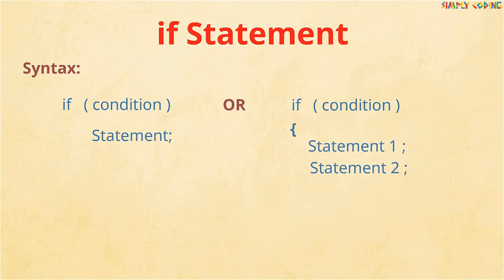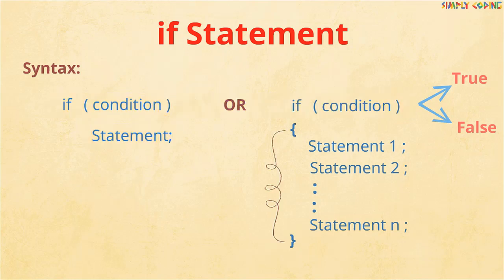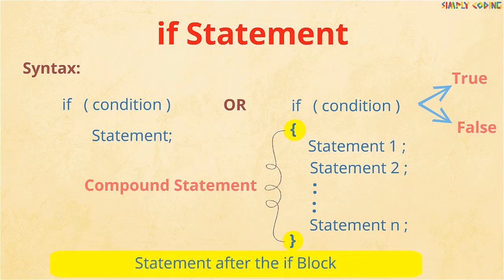The syntax for the if statement is as shown. The if statement has a test condition which evaluates to true or false. If it evaluates to true, the block of statements that follow it are executed. If it is a single statement you can write it directly; if it has multiple statements, also called compound statements, you need to enclose them in curly braces. If it evaluates to false, control jumps to the statement after the block.